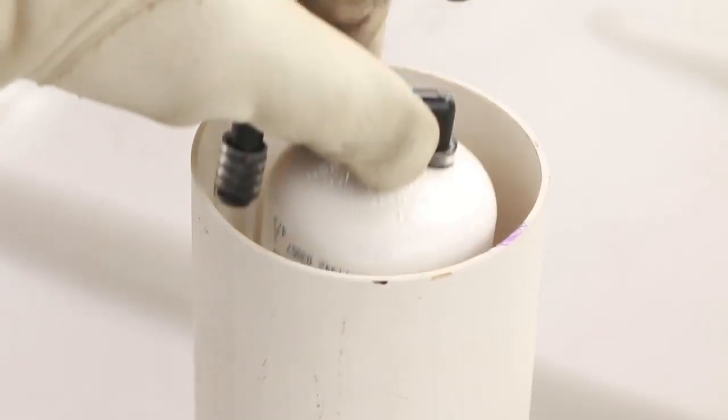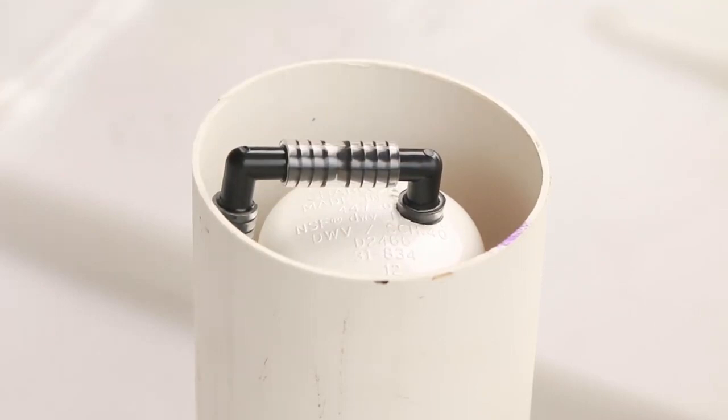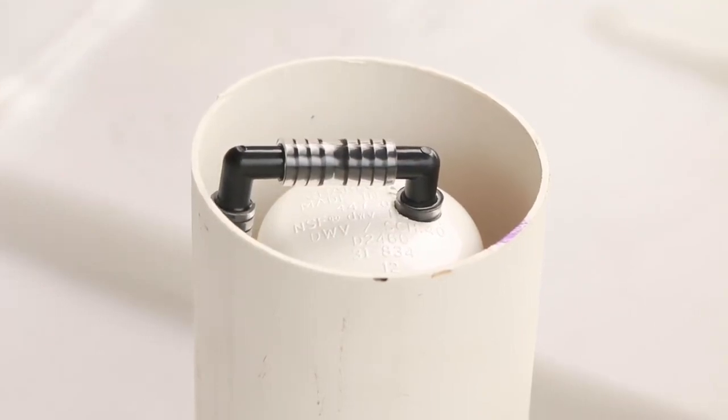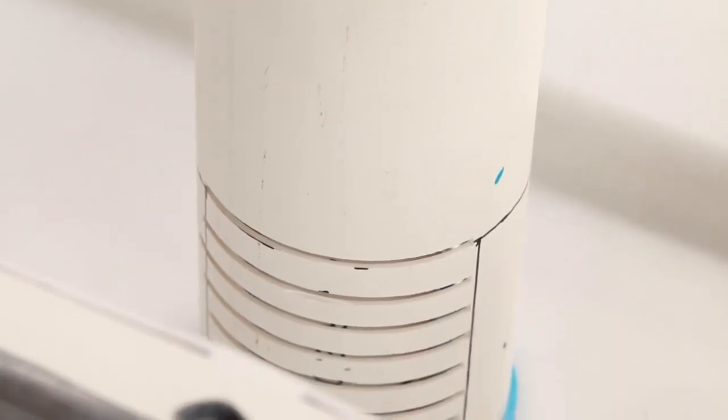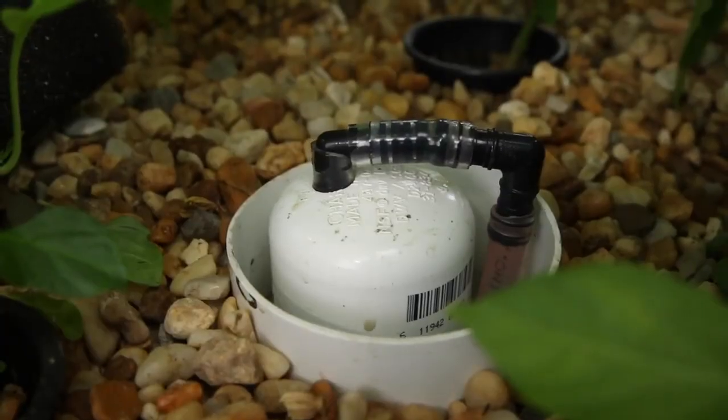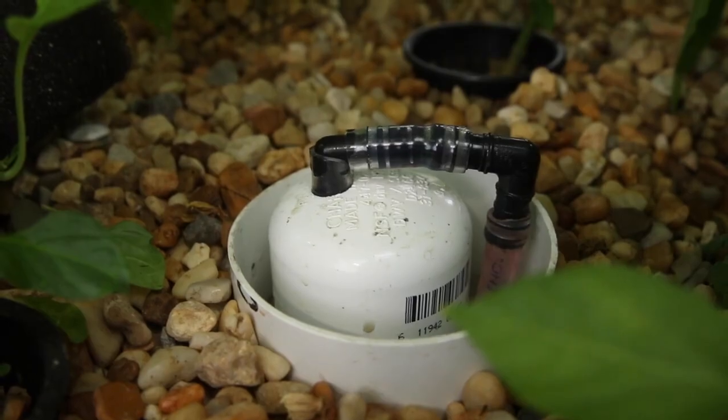Place the bell siphon over the stand pipe in the grow bed, inside of the 4 inch protective sleeve. Because it has no moving parts, once properly fitted, this bell siphon is very reliable and requires almost no maintenance.